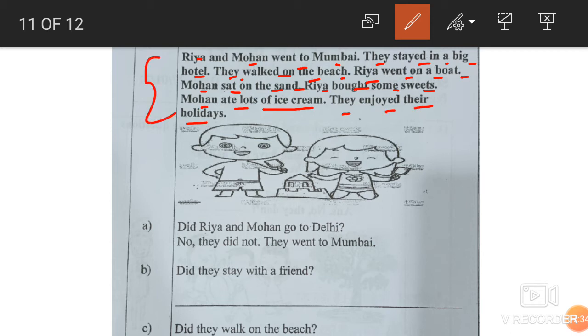Did Riya and Mohan go to Delhi? No, they did not. They went to Mumbai. There is no need to write Mumbai. Just simply you have to write no, they did not. Riya and Mohan are two people. That is why they. Did in the question, did in the answer. And not, because here no is there, so not will come. Next. Did they stay with a friend? No, they stayed in hotel. So no, they did not. Or no they didn't. You can write didn't also.